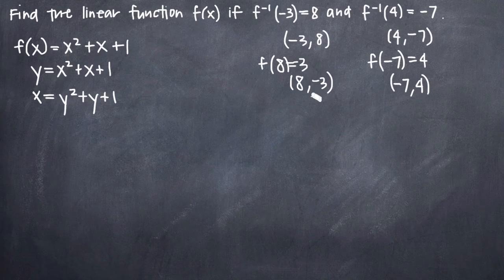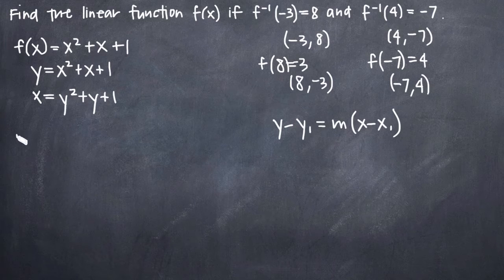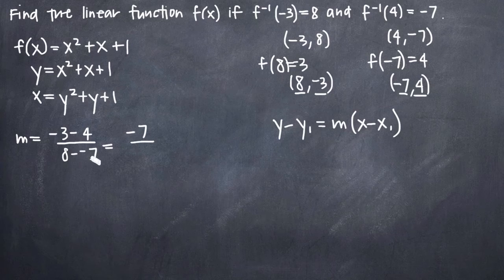Now that we have these two points, we can easily find the equation of the line. We'll use the point-slope form: y minus y₁ equals m times x minus x₁, where x₁, y₁ is a coordinate point and m is our slope. To solve for m, we take the y value negative 3, subtract the other y value 4, and divide by our first x value 8 minus our second x value negative 7. Negative 3 minus 4 gives us negative 7, divided by 8 minus negative 7 which is 8 plus 7, giving us 15. So m equals negative 7 over 15, a slope of negative 7 fifteenths.